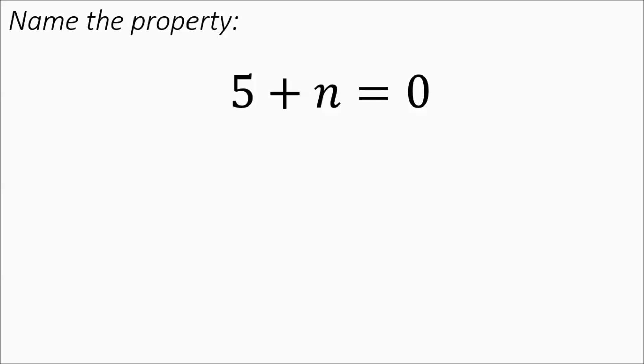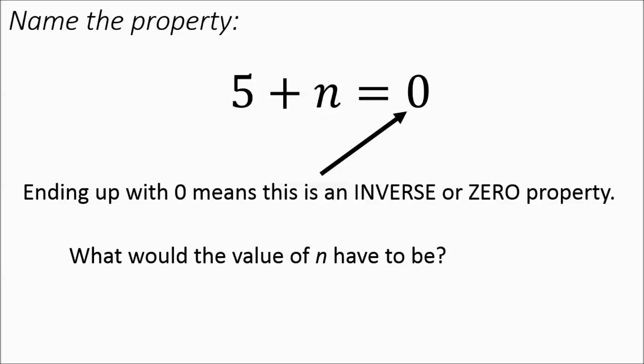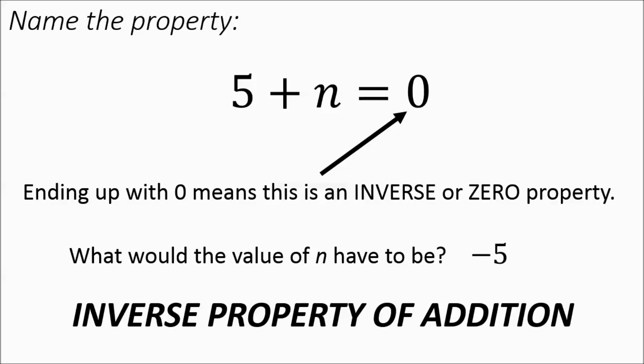Now we're ending up with 0 again — we've got 5 plus a number equaling 0. A lot of kids will see that 0 and automatically think it's got to be the zero property. Double-check the math, though — seeing that 0, it could be the zero property, but it could also be the inverse property. You need to figure out what n is. If you do adding opposites, 5 plus its opposite would be 0, so n has to be negative 5. It's going to be the inverse property of addition.